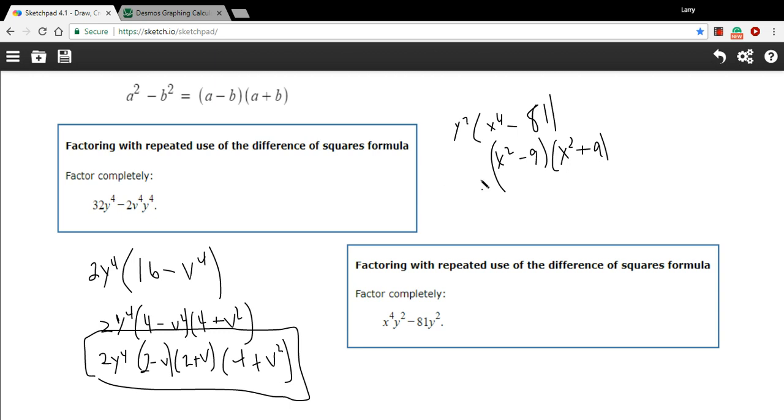And of course we've got our y squared out here too. And then we've got one more difference of squares here. x squared minus 9 is a difference of squares. So I can write that as x minus 3 times x plus 3.